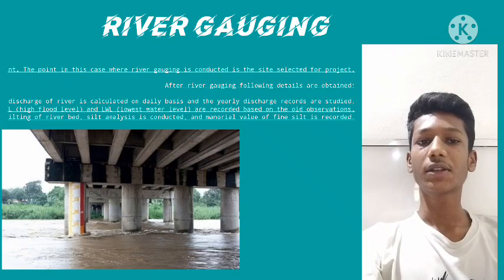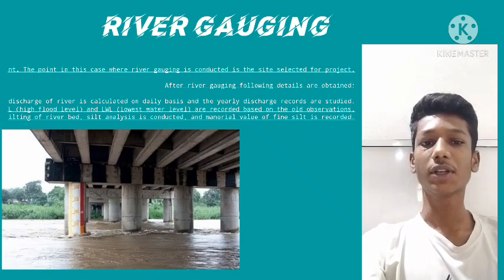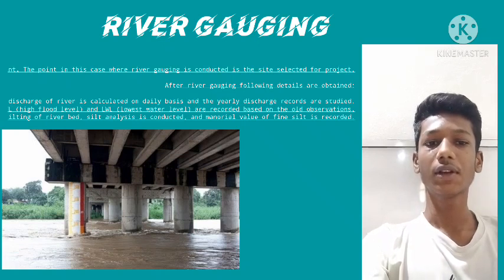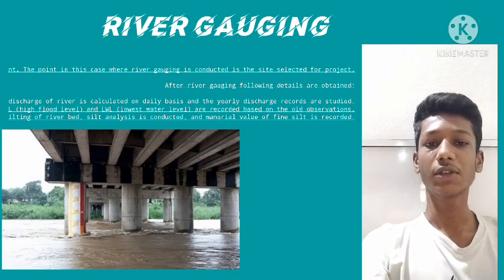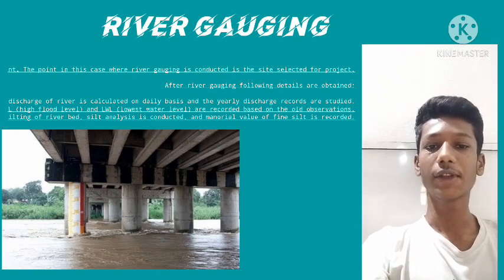River gauging is the measuring of water discharge at a point — in this case, at the site selected for the project. After river gauging, the following details are obtained: the discharge of water in the river is calculated on a daily basis and yearly discharge records are studied. The HFL (High Flood Level) and LFL (Low Flood Level) are recorded based on old observations.